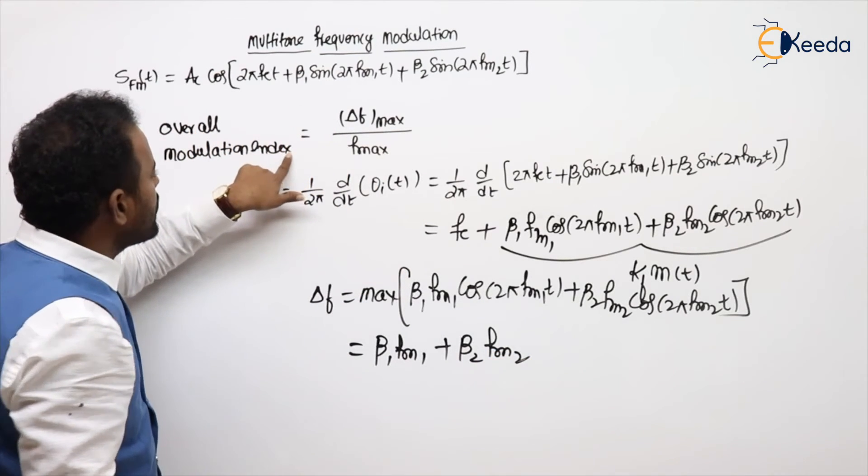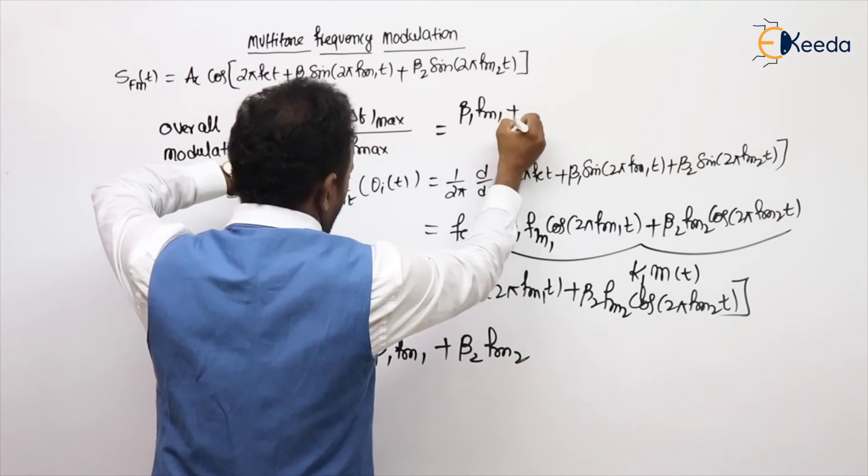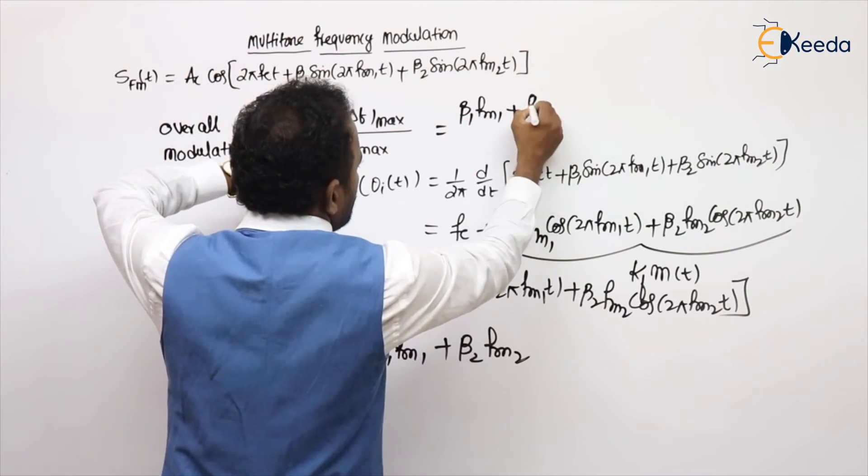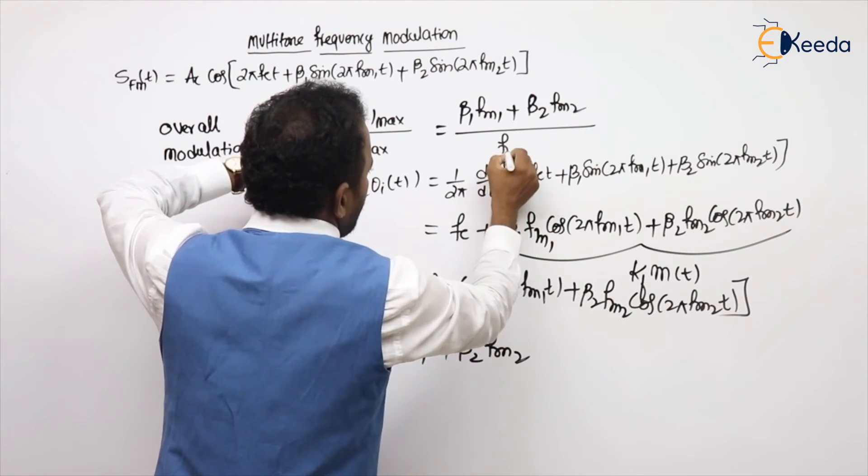Then what is this one? β1 fm1 plus β2 fm2 divided by f max.